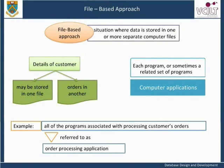If the data is kept in different files, there could be problems when an item needs updating, as it will need to be updated in all the relevant files. If this is not done, the data will be inconsistent and this could lead to errors. The problem could be made even worse if different items of data are changed in different departments, so that the invoice application uses a different address from the sales mailing list program for the same customer.